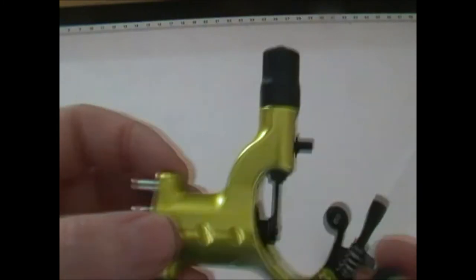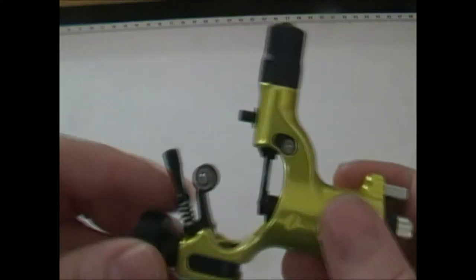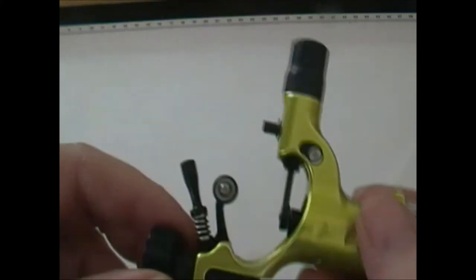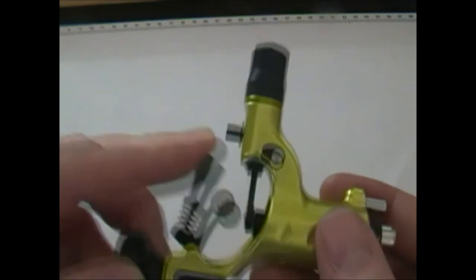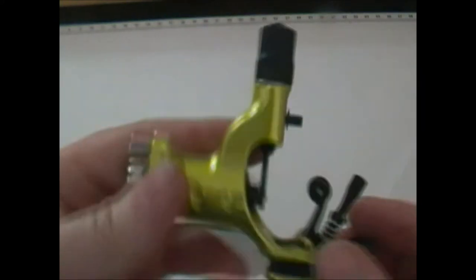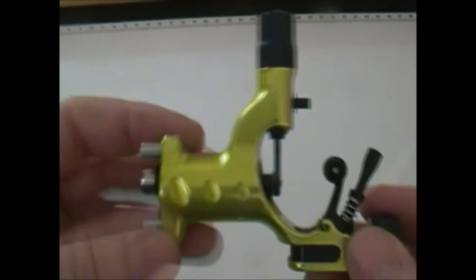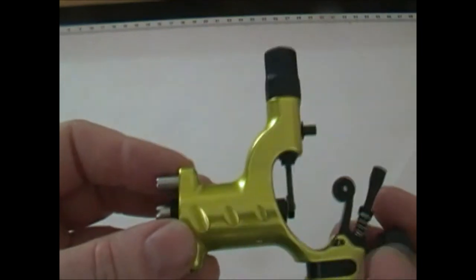Just by adjusting this screw here you don't need to buy any excenters or anything. It's all in with the machine. So that's a really welcome addition to this machine as well. The fact that you don't need to be purchasing, because these excenters, you know, they're not cheap, they're about £20 a piece when you buy them. So it's nice just to be able to tweak the machine and get the throw you want without buying extra pieces of kit.